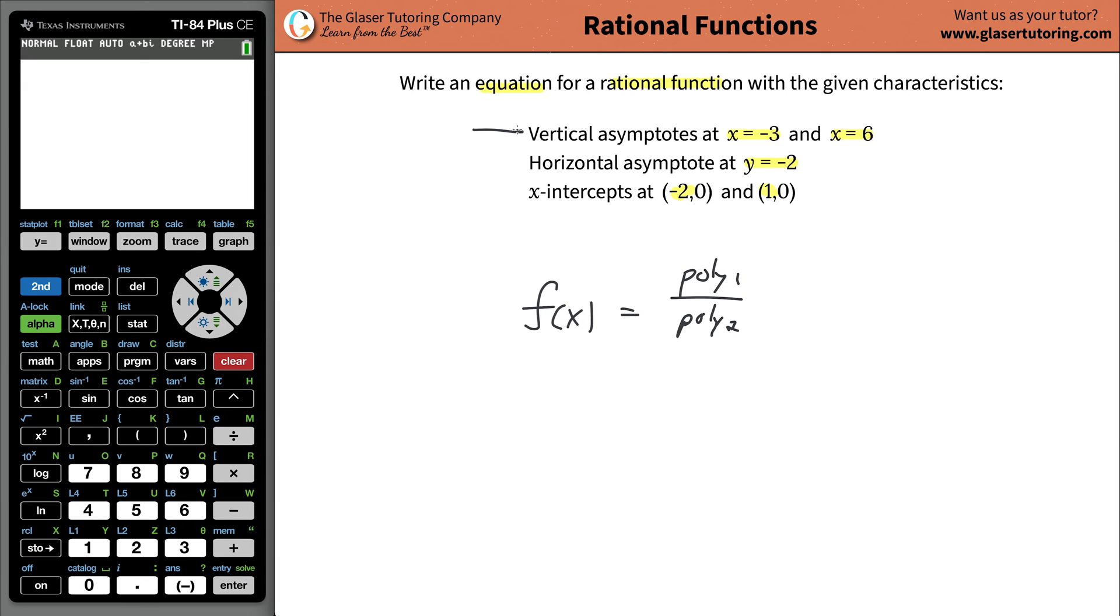The first thing I like to do is start with the vertical asymptotes. Remember, these are the values of x that give a wacky result to this function. In other words, x can't be negative 3 and x cannot be 6.